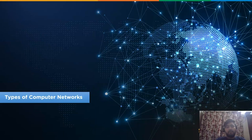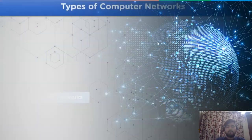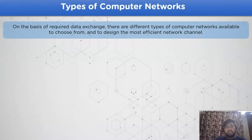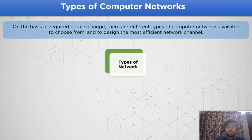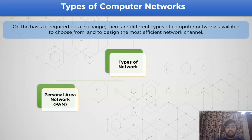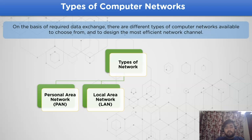There are different types of computer networks available to choose from, which depends upon the need of the user or the network channel. On this basis, we can differentiate into four types: first, Personal Area Network (PAN), used in a personal area to connect devices like mobile phones and personal computers. Next is Local Area Network (LAN), used to connect multiple devices across different buildings or within a single building.